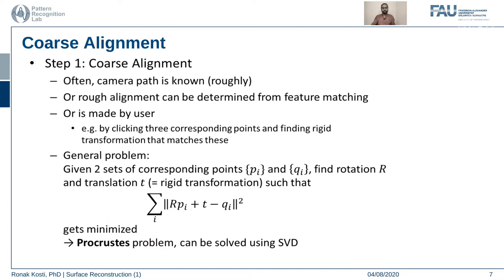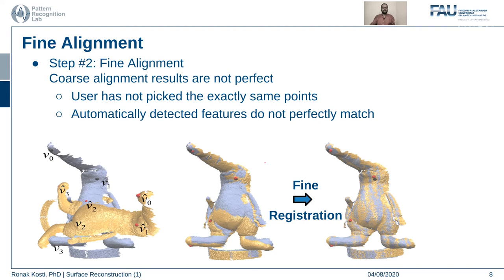This error can be minimized using the Procrustes problem-solving algorithm, whose solution is an SVD decomposition. In coarse alignment, we choose certain reference points on the scans — for example, red points on a golden scan and matching points on a silver scan — and register them using these reference points. The problem with coarse alignment is that sometimes these points are not present in all scans, and users may not pick exactly the same point, so the alignment may not match well.